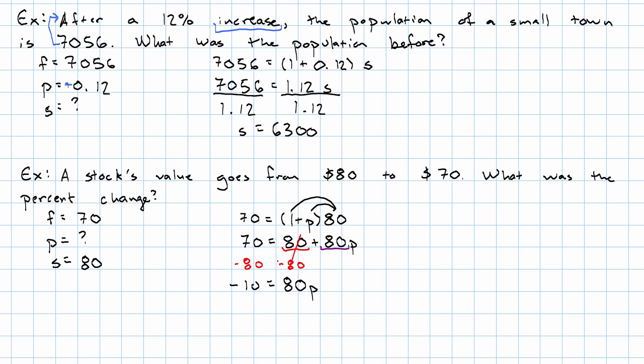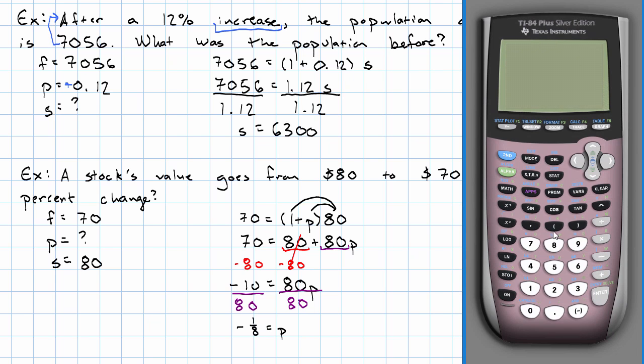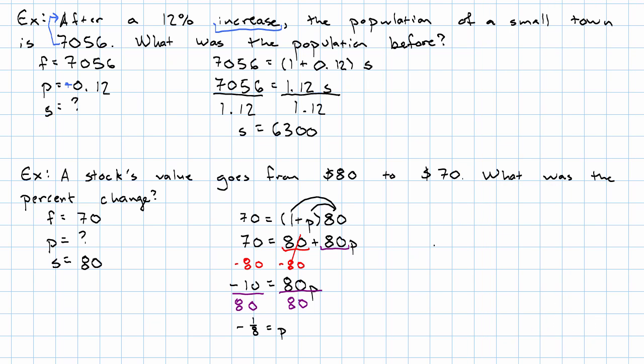Now we want to get rid of the coefficient. To get rid of a coefficient, we multiply or divide. We'll divide in this case. And we get negative 1/8 is P. We want to answer as a percent. So we'll say negative 1/8 times 100 is negative 12.5. So the percent change was negative 12.5%.